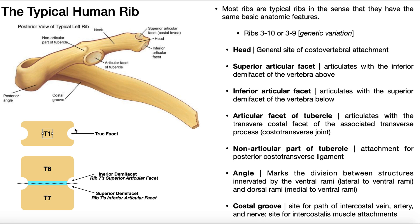Rib 1 articulates with T1 completely in the facet within T1. For typical ribs, the space where rib 7 articulates is not completely within T6 and not completely within T7 — it's shared between them. Rather than being a full facet, it has two halves: an upper half and a lower half. Each half is called a demi-facet. Demi typically means half — like demi-gods in Greek mythology, a demi-facet is half of a full facet. This is the case when the attachment of the rib is shared between two vertebrae.